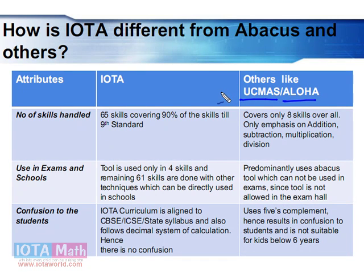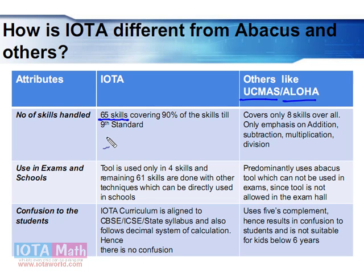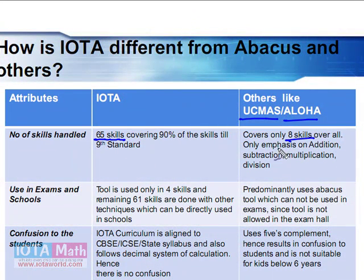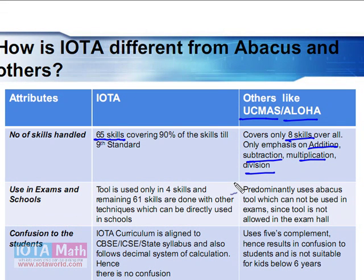Let's look at the number of skills students learn in IOTA compared to UC Maths and Aloha. In IOTA, there are 65 skills covering almost 90% of the curriculum up to 9th standard, including arithmetic, algebra, geometry, word problems, and many other areas. UC Maths and Aloha correspond to just 8 skills — they focus only on addition, subtraction, multiplication, and division, and in practice many students only achieve proficiency in addition and subtraction.